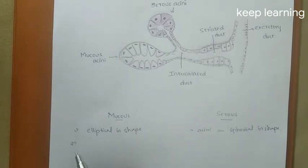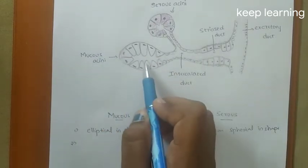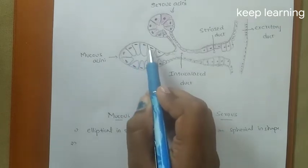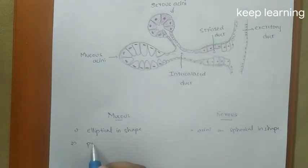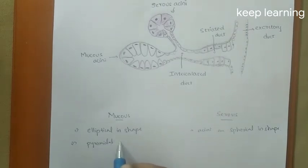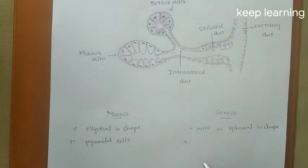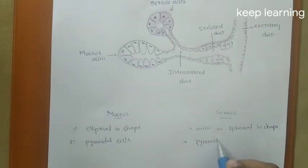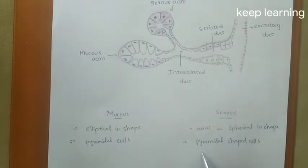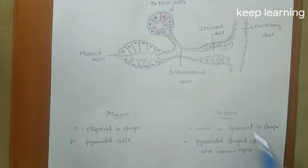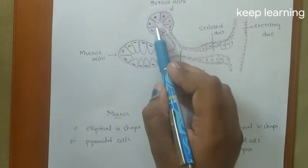The mucous acinus has pyramidal-shaped cells — these are the pyramidal-shaped cells within the acinus. Coming to the serous acinus, these also contain pyramidal-shaped cells, but with a narrow apex. In the picture we can see these are also pyramidal in shape with a narrow apex.